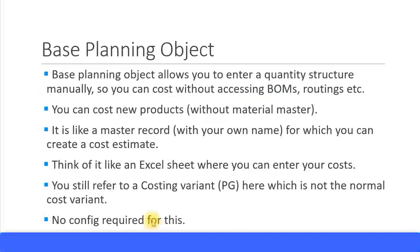A base planning object allows you to enter a quantity structure manually. You can cost without accessing any bills of materials or routing, so you don't need to create anything in the MM module or PP module. You can go straight into the CO module, create your base planning object with your own quantity structure, and cost new products without a material master.